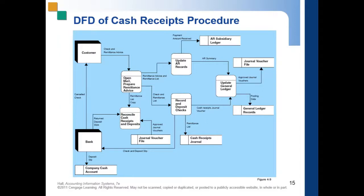Starting with the receiving or mail room: the customer makes payment, either by check or cash, together with a remittance advice. The mail room employee opens envelopes containing customers' payments and remittance advices. Remittance advices contain information needed to service individual customers' accounts, including payment date, account number, amount paid, and customer check number. Only the portion above the remittance advice — which is removed by the customer — is returned with the payment.